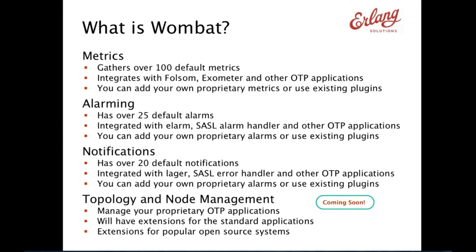Wombat has different groups of functionality — it collects metrics, alarms, and notifications from the nodes. One common theme is that Wombat automatically starts collecting all this data once it connects to a node, stores it in its own database, and makes it available via its REST interface. It also has a web dashboard for convenient visualization. If you have another system — Graphite, Zabbix, or Nagios — that's another way to get all this data visualized.